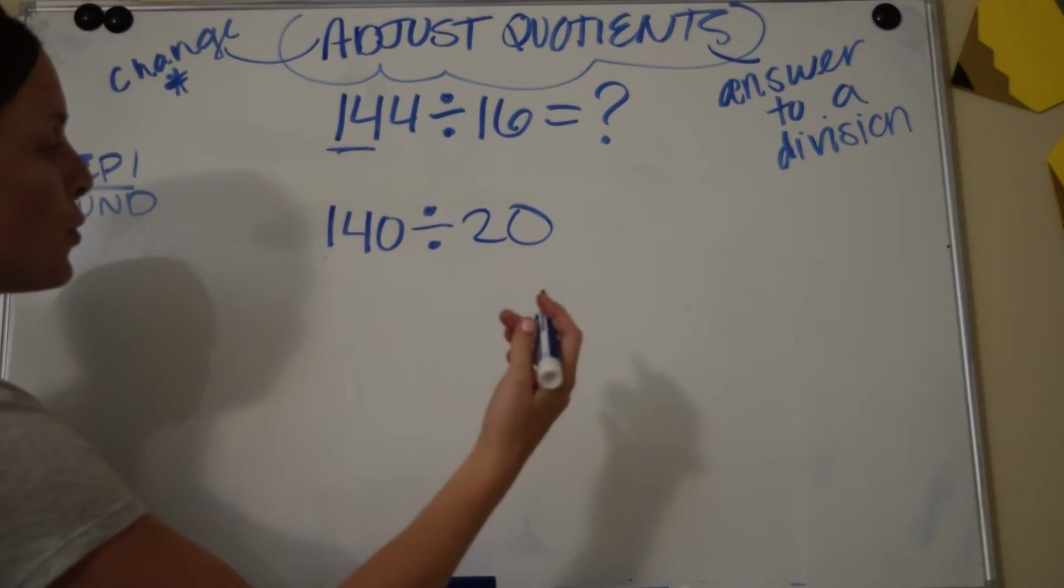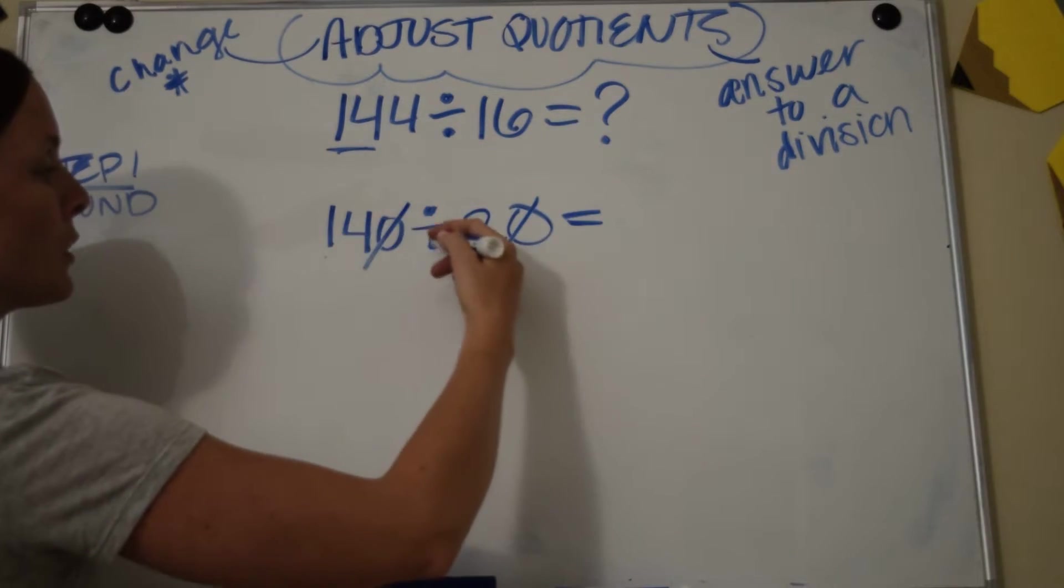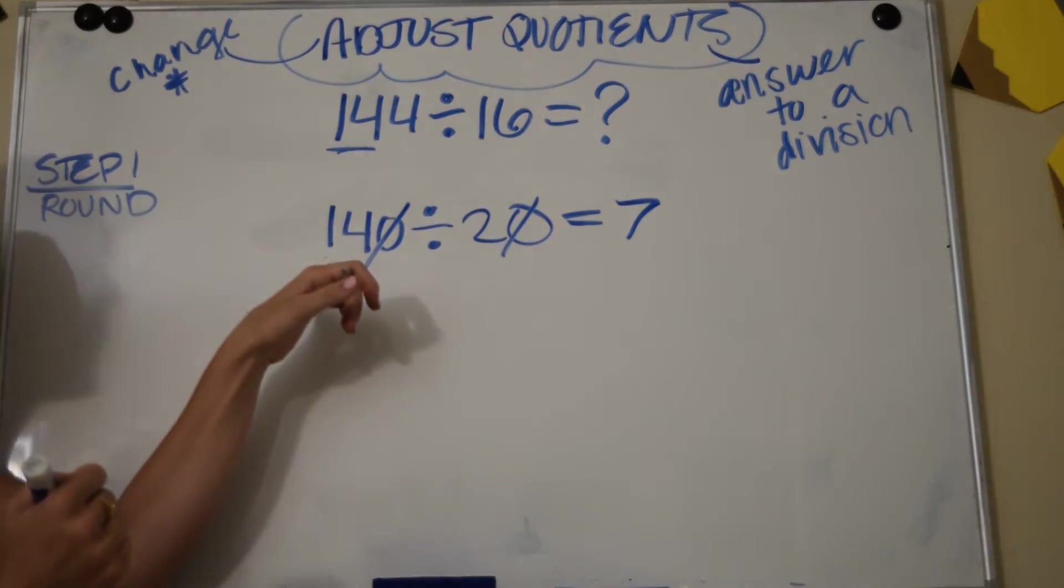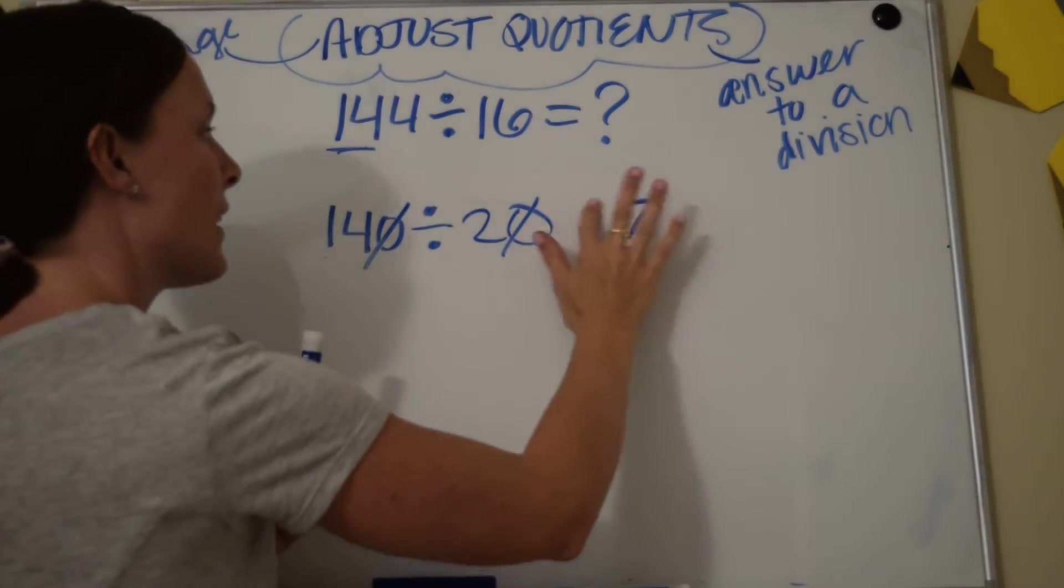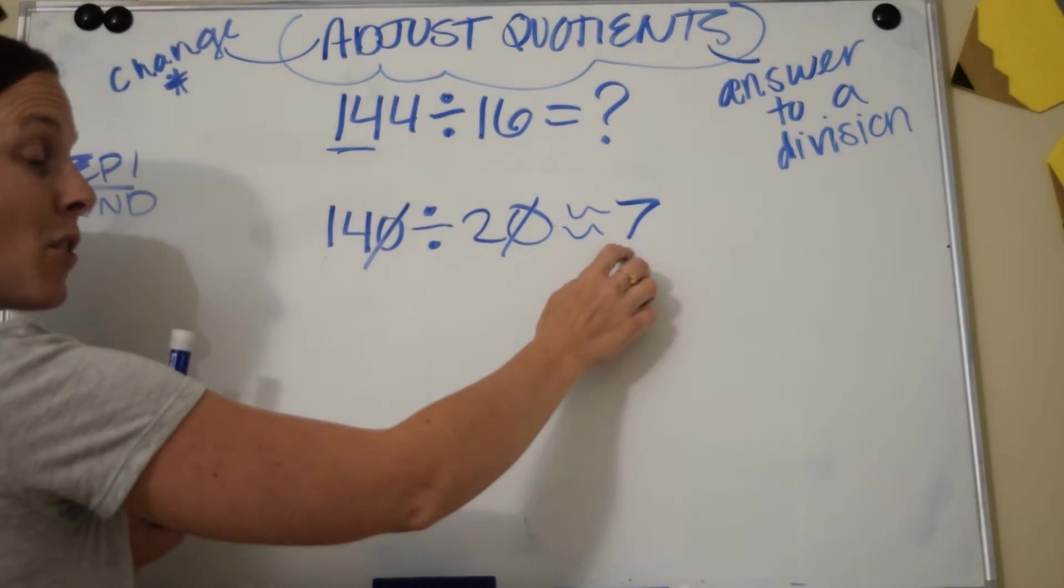So use your zeros trick. I can cross out the zeros to get my answer. 14 divided by 2 is 7. So now that we rounded, we know that the answer to this problem will be something around or close to 7.